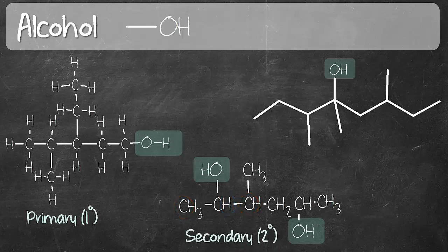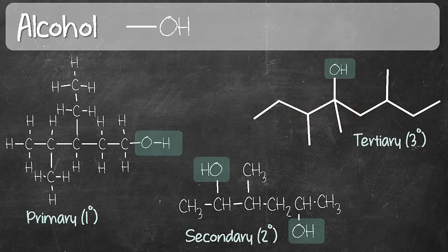Last but not least, the third structure — the carbon that is connected to OH is connected to three other carbons. No hydrogen, just three carbons. So three — that's a tertiary. So you have a primary alcohol on the first structure, secondary in the center, and tertiary on the third.